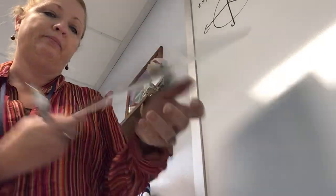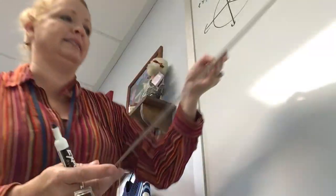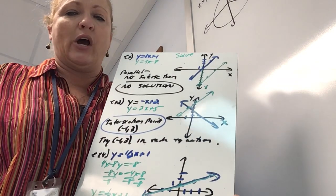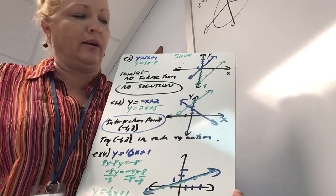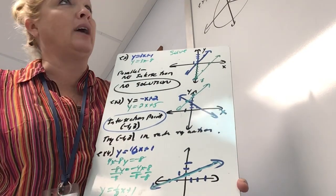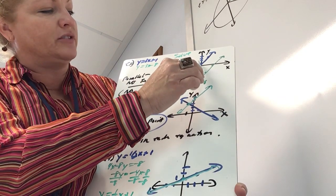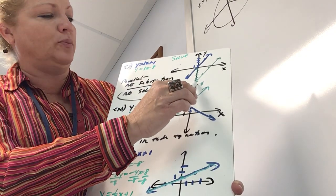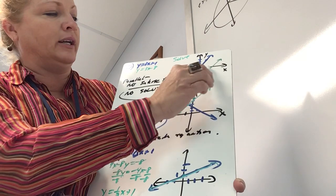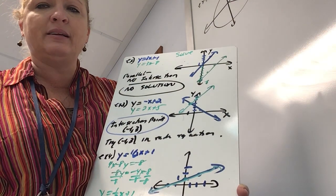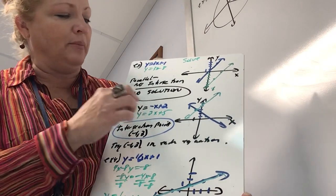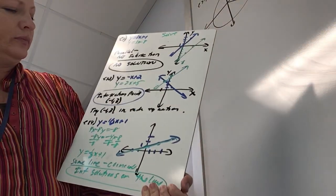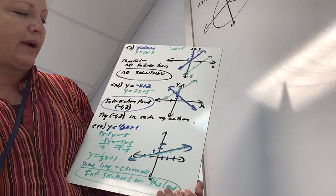For example two, both equations have the same slope, so we expect parallel lines. The blue equation has y-intercept 1 and slope 3; the green has y-intercept negative 8 and slope 3. They don't intersect, so there is no solution to this system.